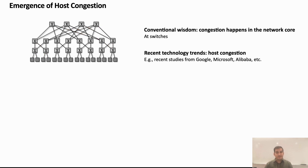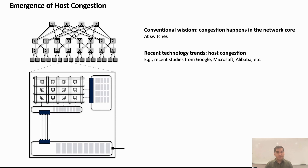However, recent studies from large-scale production clusters at Google, Microsoft, Alibaba, et cetera, have demonstrated a fundamental shift of congestion from the network core to the hosts. Essentially, adoption of multi-hundred gigabit links coupled with relatively stagnant technology trends for resources within the hosts, like cache sizes, memory bandwidth and access latencies, led to the emergence of host congestion.